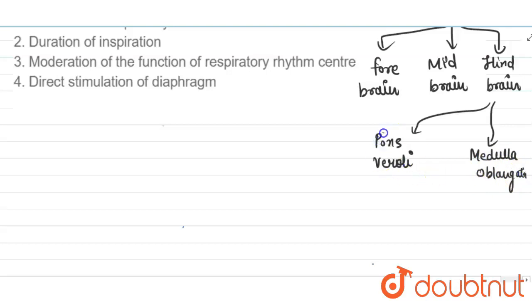So this is pons varolli, where the pneumotoxic center is present in just the upper part of the pons.